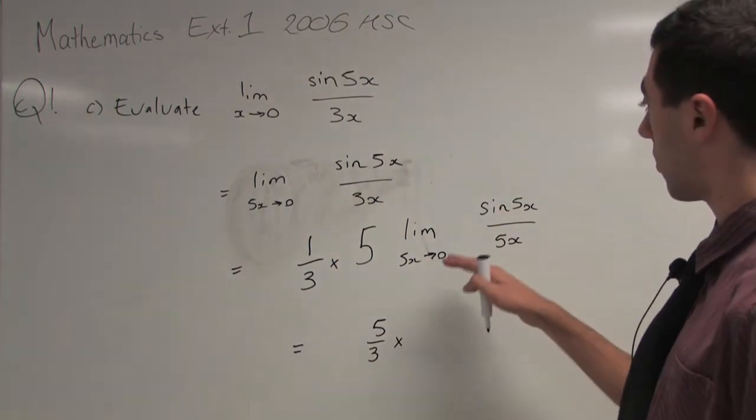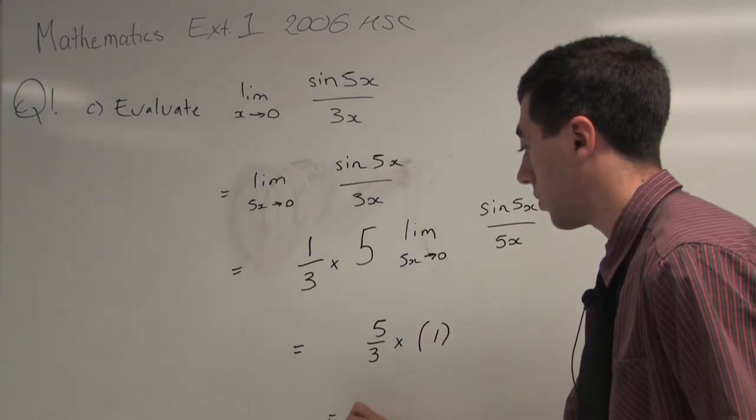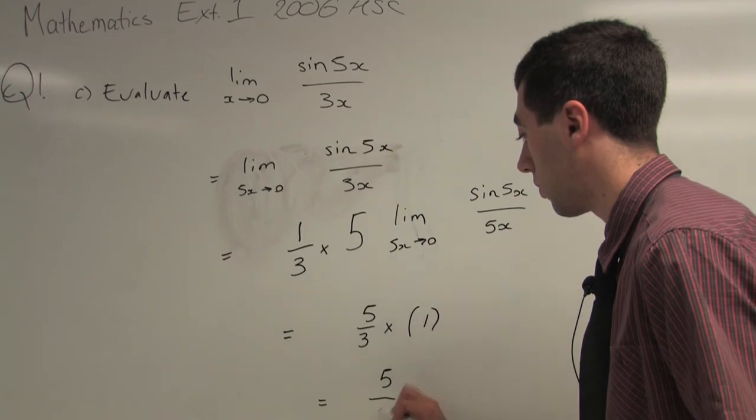and we know from what I showed you before, this will all converge to 1, and that is your final answer: 5 over 3.